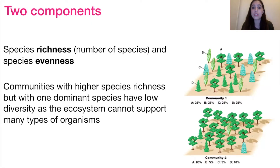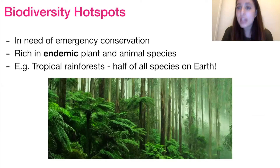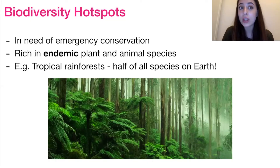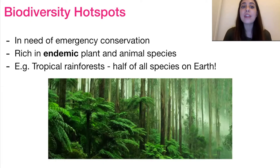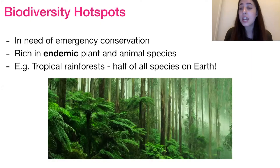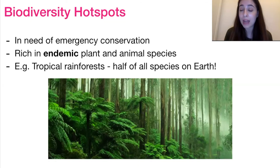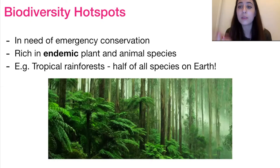Community two shows that the ecosystem is not able to support a wide variety of organisms. The next thing to consider is biodiversity hotspots. As the name suggests, these are areas with very high biodiversity — a lot of different species that are relatively even. These areas are in need of emergency conservation, not only because of their high biodiversity, but because they are rich in endemic species found nowhere else on Earth and also because of the demands placed on these areas.